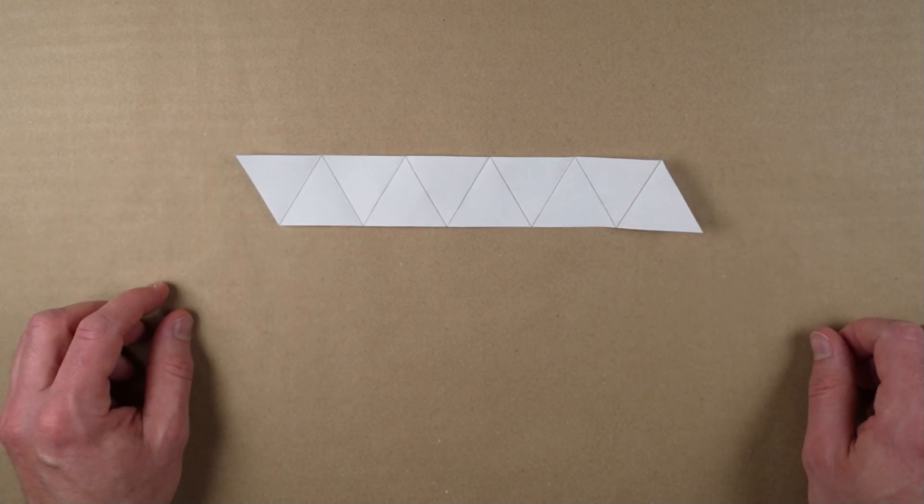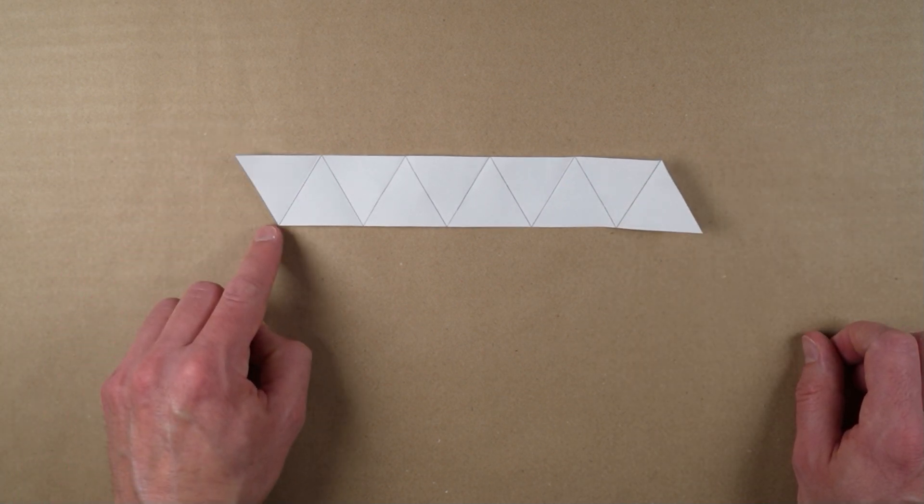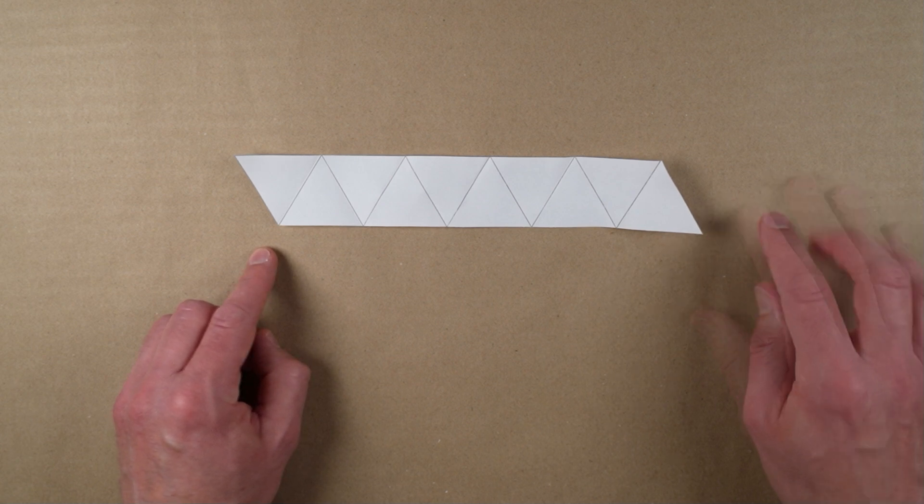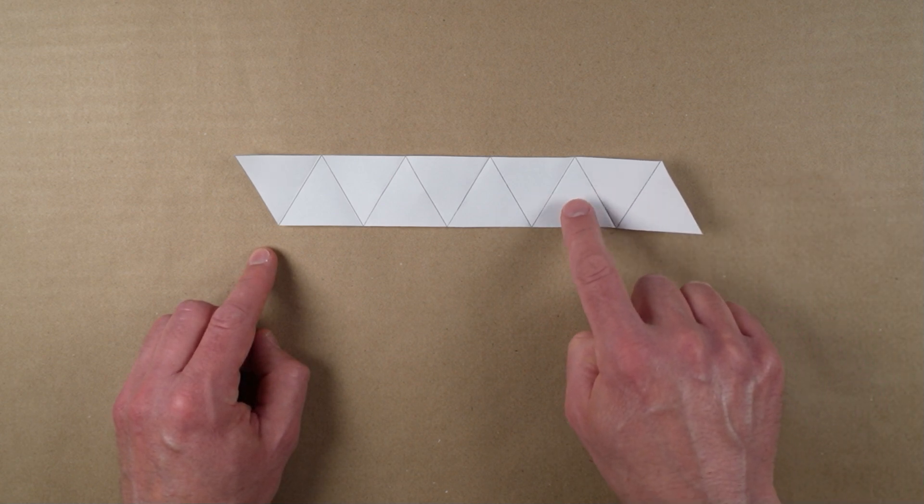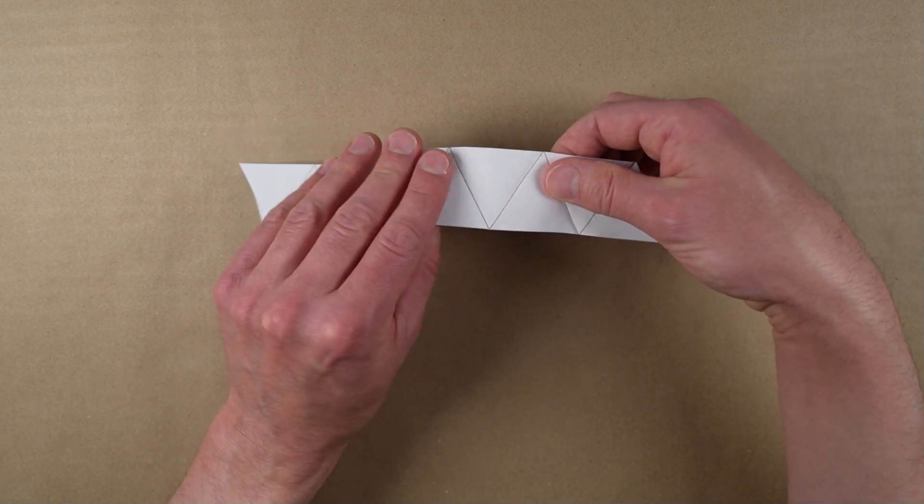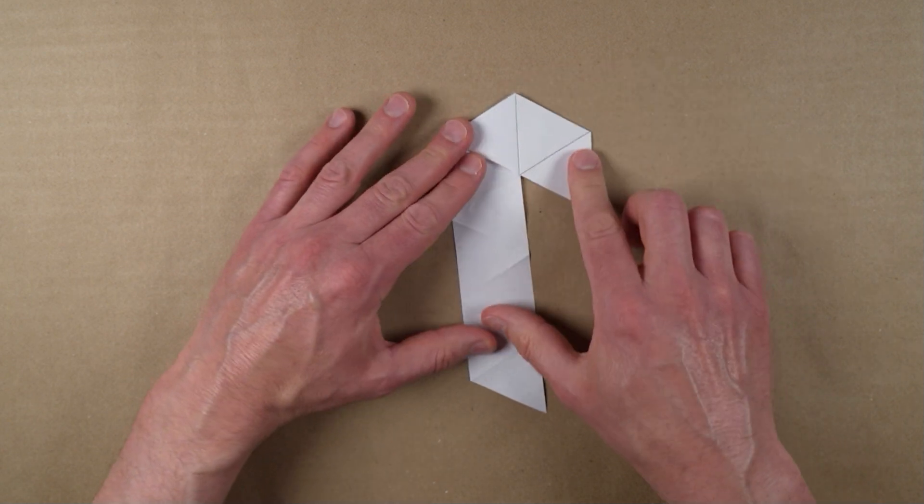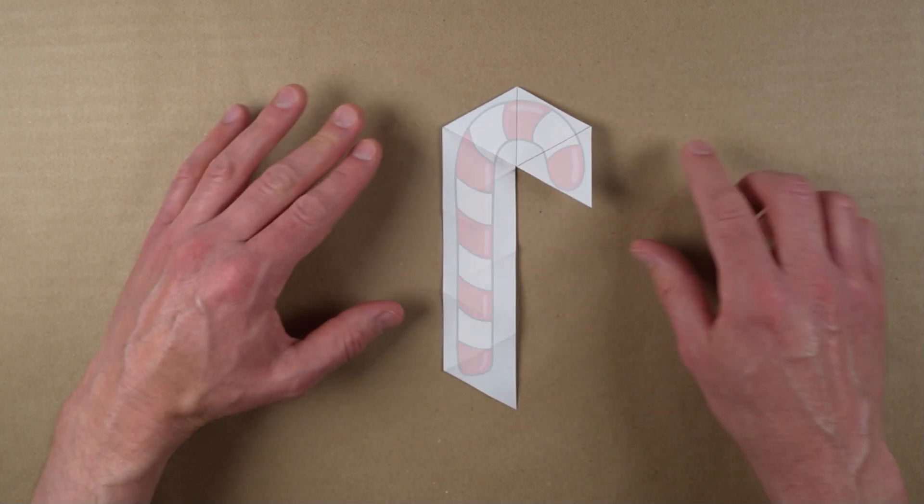Set the strip in front of you like this, with the left and right edges slanting downward to the right. Count three triangles from the right and fold the remainder of the strip back 180 degrees. The triangles on each side of the fold should touch, creating this candy cane shape.